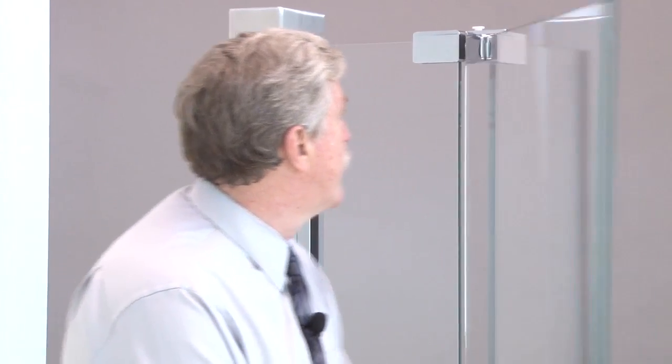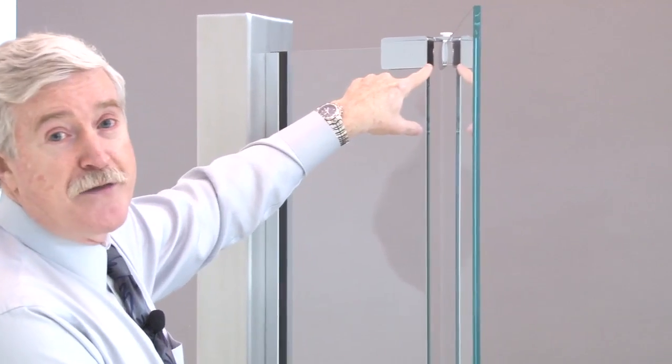You simply slide the glass to any position you want it to be locked into. Then this little set screw on the edge of the hinge, you simply tighten that. It pushes our wedge in and holds that tight against the glass.